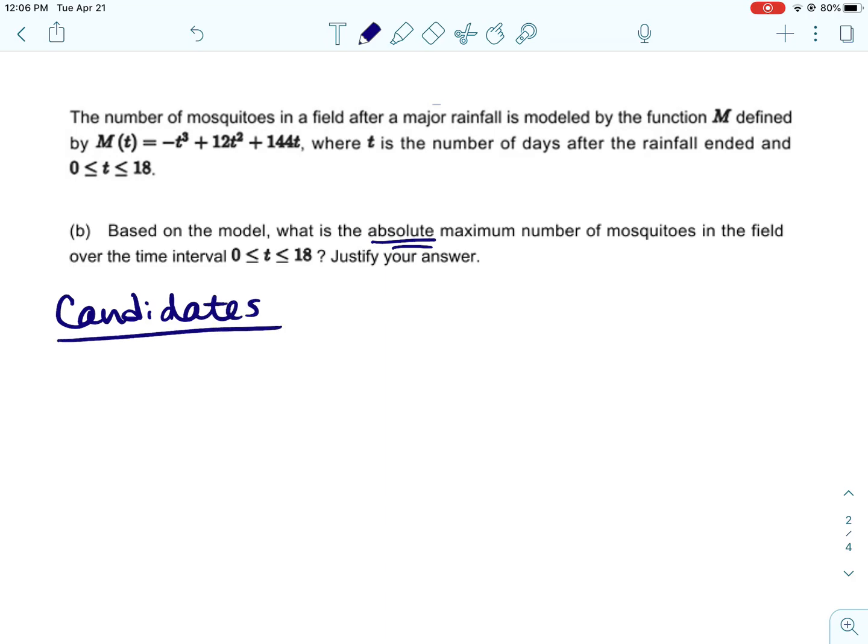Okay, the next question: based on the model, what is the absolute maximum number of mosquitoes in the field over the time interval? So when you guys see absolute maximum or absolute minimum, I want you to remember what we talked about with the candidates. So the first thing we're going to do is we're going to hold an election for maximum, and we have to identify the candidates. The candidates are going to be the endpoints of your interval and the critical numbers or critical values or critical points, whatever you want to call it.